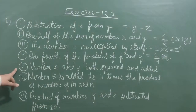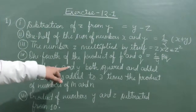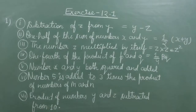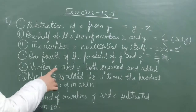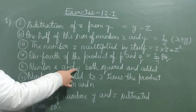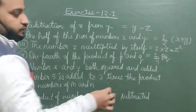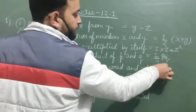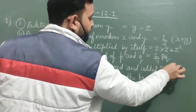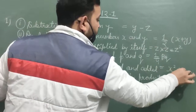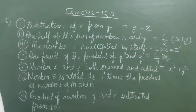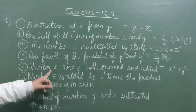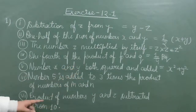Fifth part: numbers x and y both squared and added. We have to square both x and y and then add them. So the algebraic expression is x squared plus y squared.